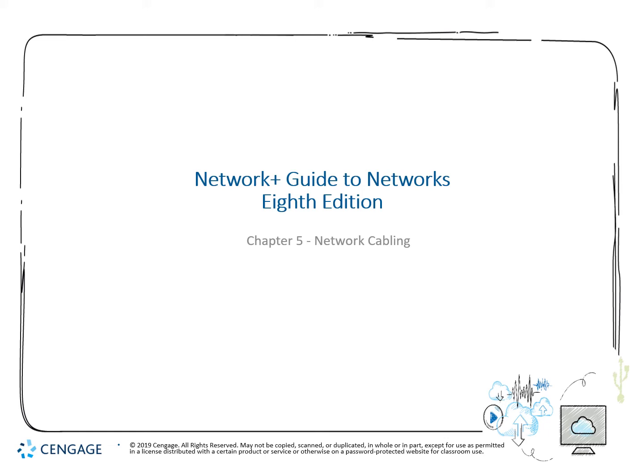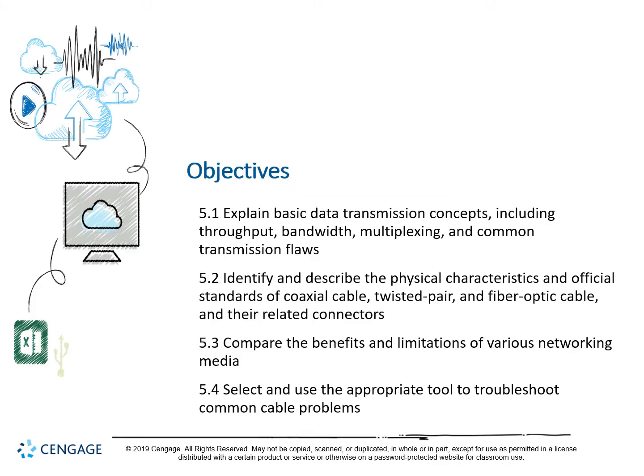Hey everybody, Mr. Armke back with you again for CTI 120. Today we're talking chapter five in the networking section, network cabling. Our objectives are to explain basic transmission content including throughput, bandwidth, multiplexing, and common flaws. We're also going to identify and describe physical characteristics and official standards for coax, twisted pair, and fiber optics, as well as their related connectors. Then we'll compare benefits and limitations of various networking tools and implement said tools to troubleshoot common cable problems.